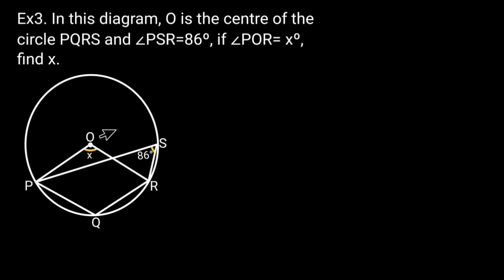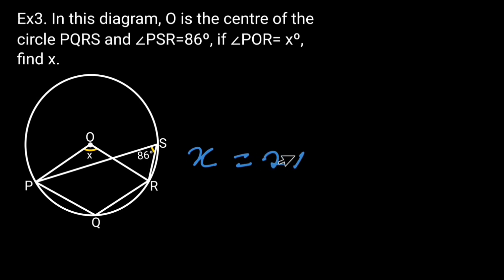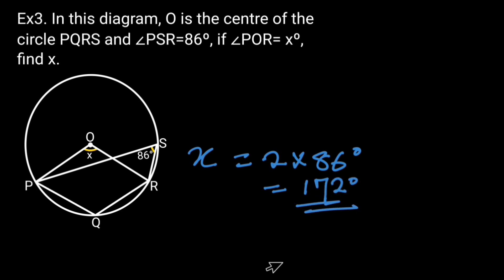Example 3: In this diagram, O is the center of the circle PQRS and angle PSR is equal to 86 degrees. If angle POR is equal to X, find X. X is equal to 2 times 86 degrees, which is 172 degrees. Reason: angle at the center is twice the angle at the circumference.